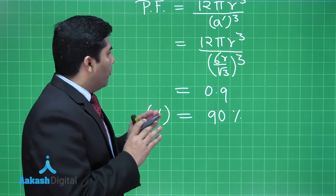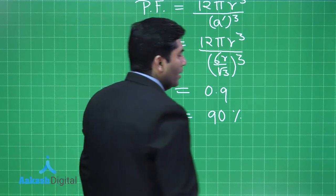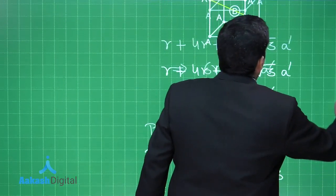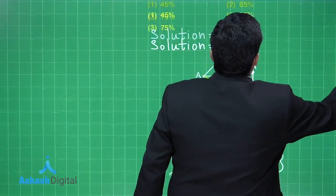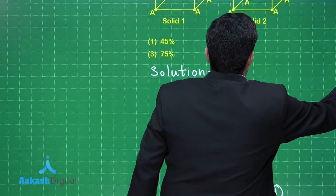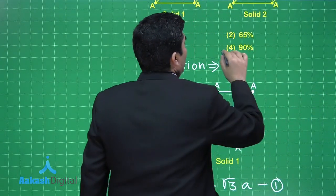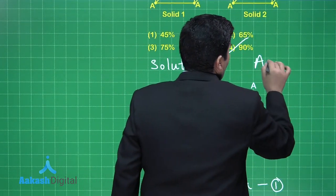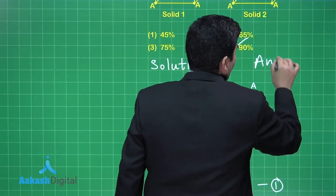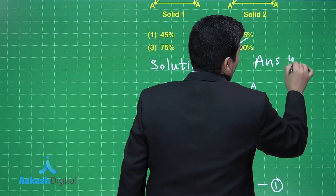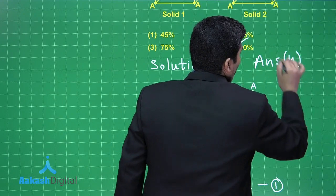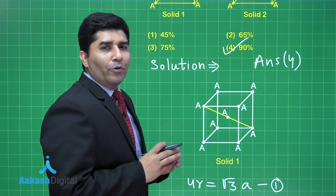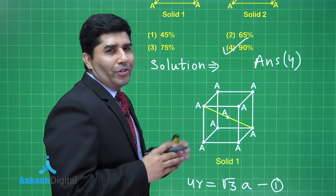Checking the options, our answer is option 4, with approximately 90% packing efficiency in solid 2. Let us move on to the next question.